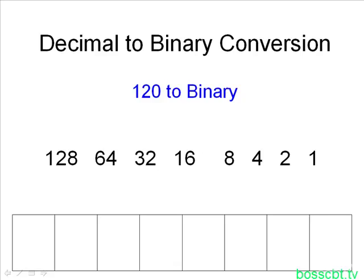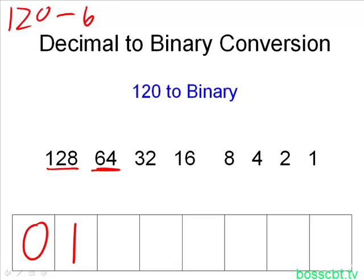And the process is really easy. All we're going to be doing is really subtracting. We start on the left-hand side and ask ourselves a question: will 128 fit into 120? In other words, is it equal to 120 or is it less than 120? If the answer is no, which it is in this case, in the bit position for that decimal value we put a 0, and we move on to the next bit position. So then we ask ourselves the same question: will 64 fit into 120? The answer is yes. If the answer is yes, we put a 1 in the bit position, and then we go ahead and subtract 64 from 120.